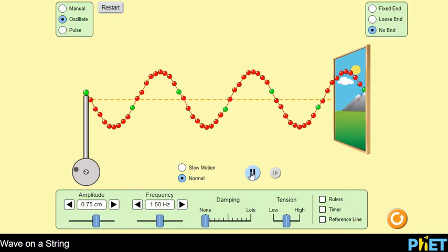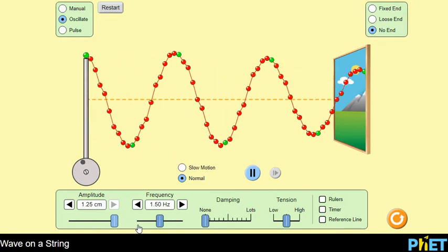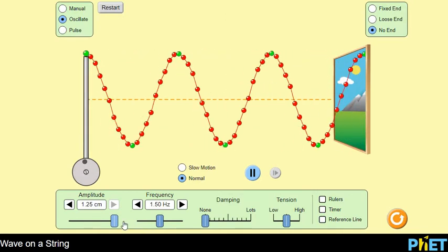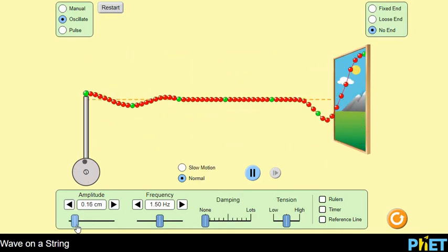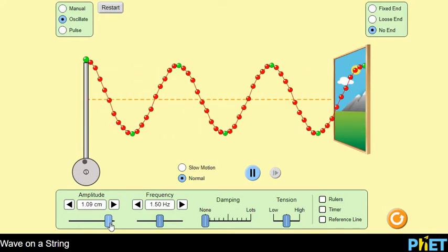Makes a nice wave for us. So changing the amplitude, of course, makes this a bigger or smaller wave, as in more vertical height. It could make it really small, too, but it's probably easier to see on a fairly large amplitude.